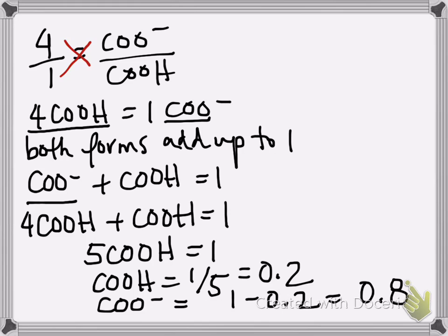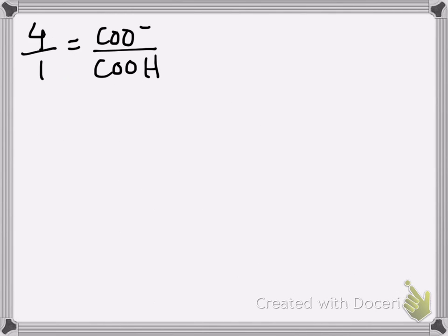If we're calculating partial charge, we look at these groups. The COOH group has no charge — it's neutral. The COO⁻ group has a negative charge, so this 0.8 is a negative 0.8 charge influence on the overall charge of this amino acid. Going back to this ratio, the other way you can do this — go with whatever way makes most sense to you, as they're just mathematically different.